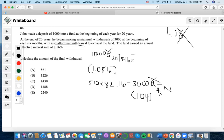50,382.16 is the present value. It's going to be the number of years. So the number of years is going to be 26.47, right?